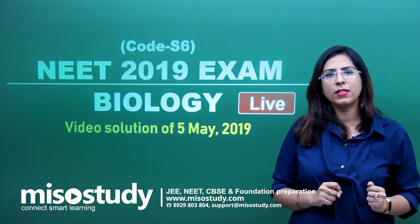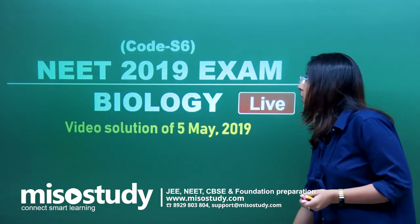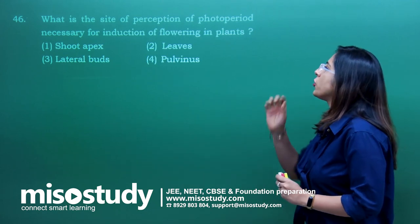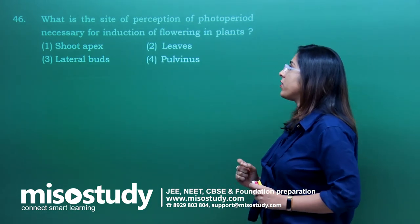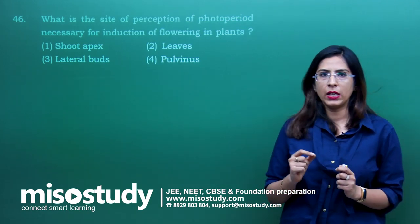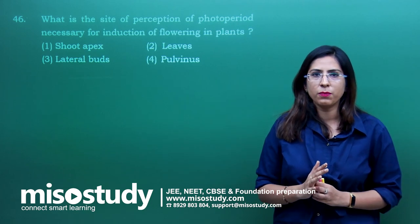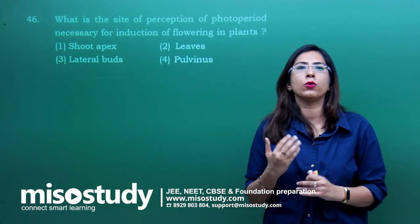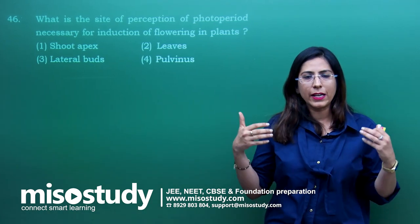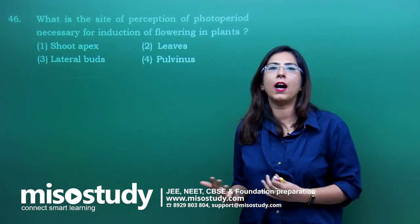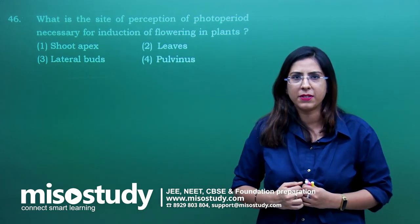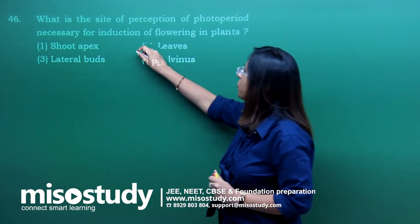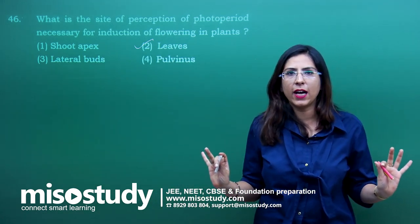We will start with code S6 and the first question of biology — question number 46. The question asks: what is the site of perception of photoperiod necessary for induction of flowering in plants? This question is related to photoperiodism. Induction happens in the case of leaves because they have photopigments. PFR and PR are interconvertible forms that lead to flowering in long-day and short-day plants. The correct answer is option 2 — leaves. This was a direct question from NCERT.